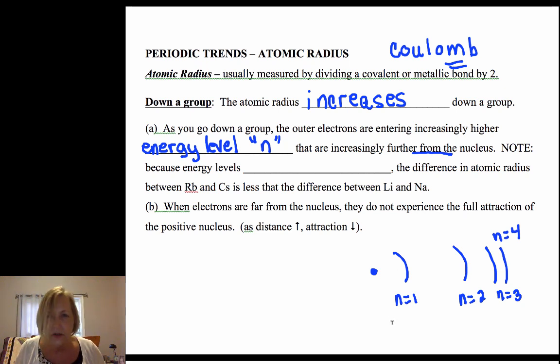That's always one of the first things you want to look at when you're looking at periodic trends—you want to list the n value. If you're comparing two elements, the first thing you want to do is compare their outer n value.